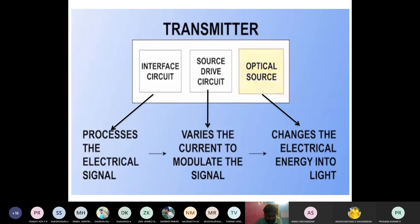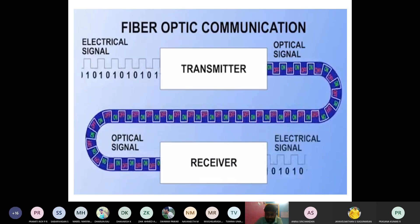Once the electrical signal is processed, it goes to the source drive circuit. The source drive circuit modulates the information — it changes the signal. We pass an electrical current; that current is converted into an optical signal with the help of the source drive circuit. Finally, the converted optical signal reaches the optical source medium.